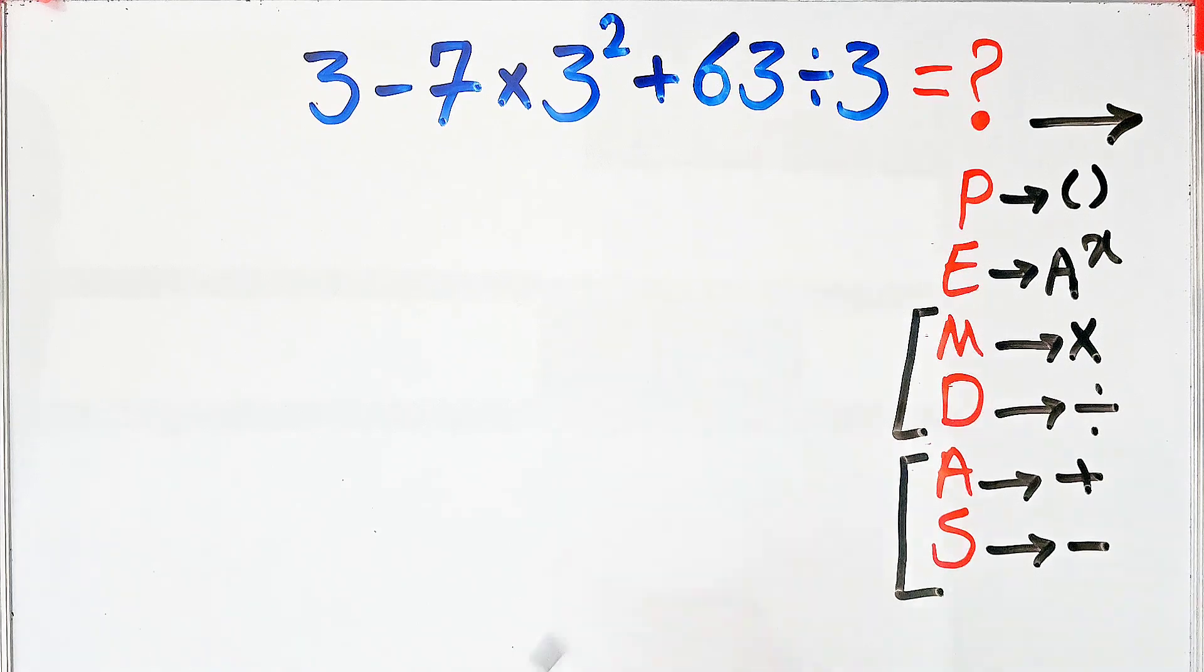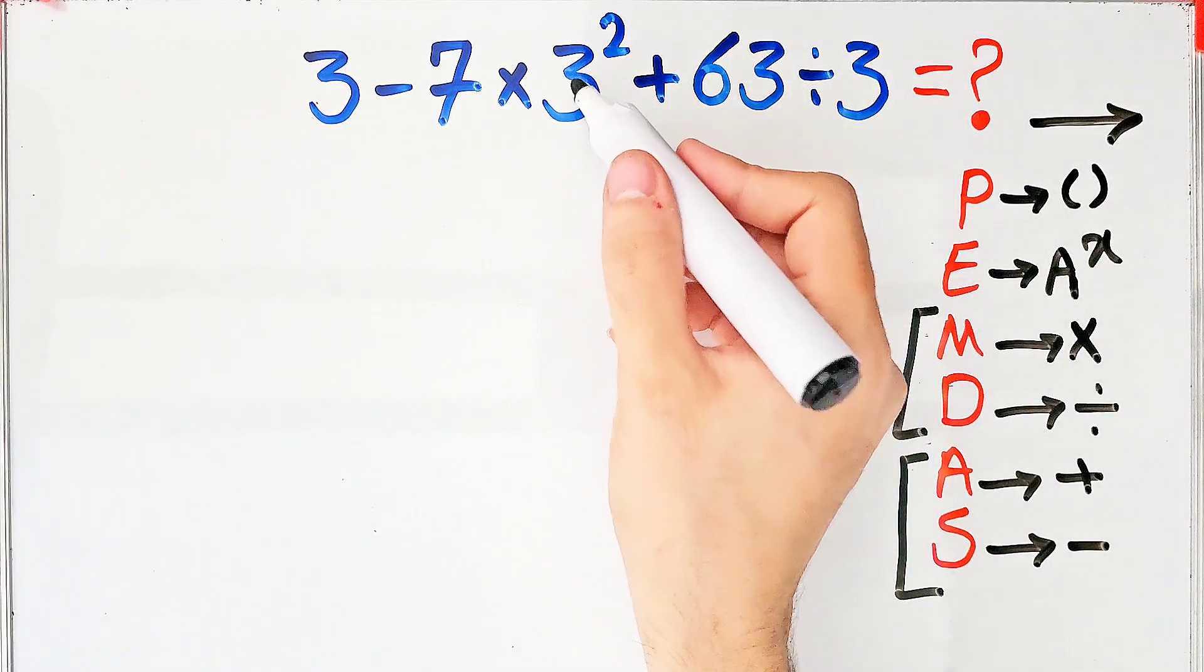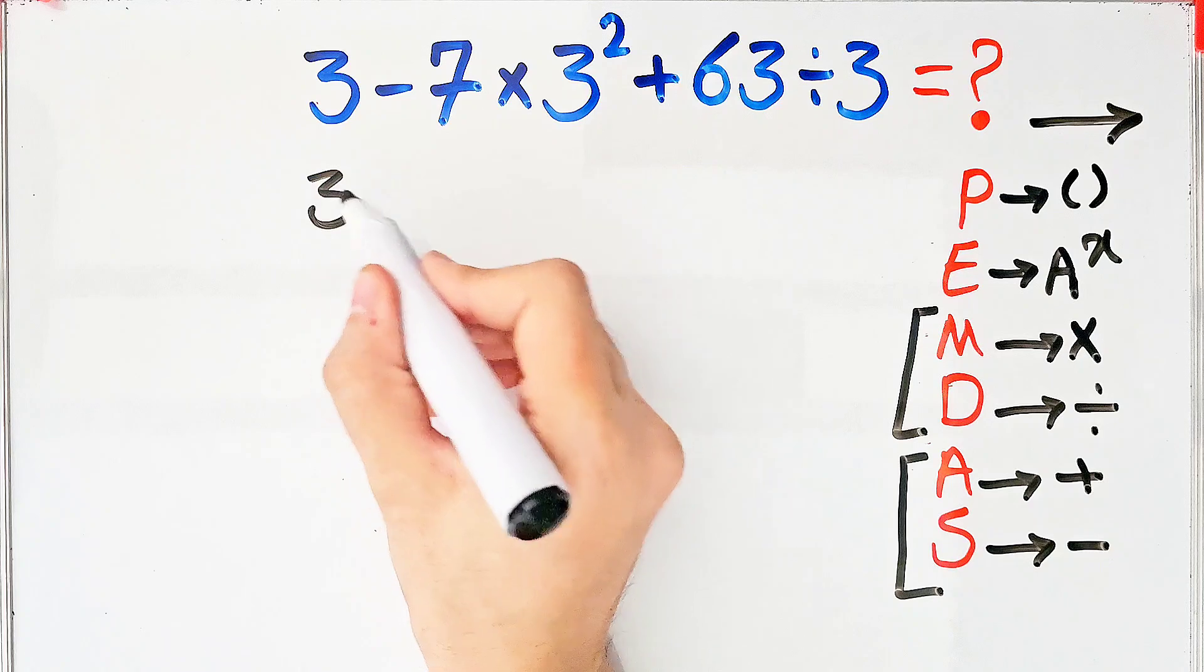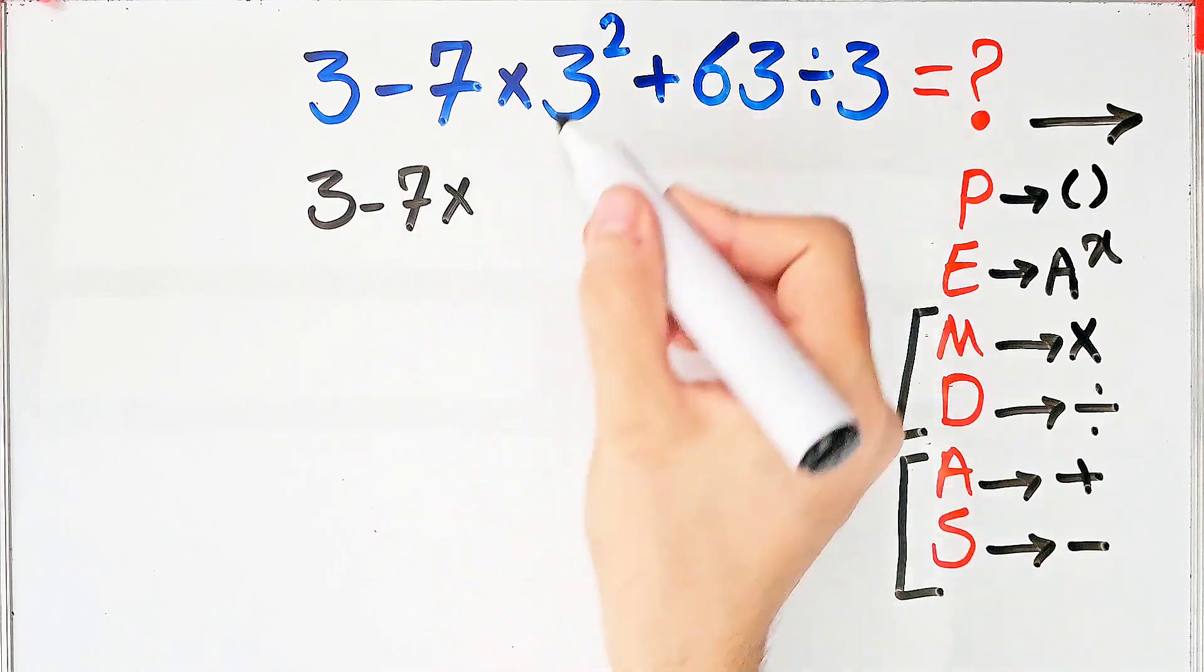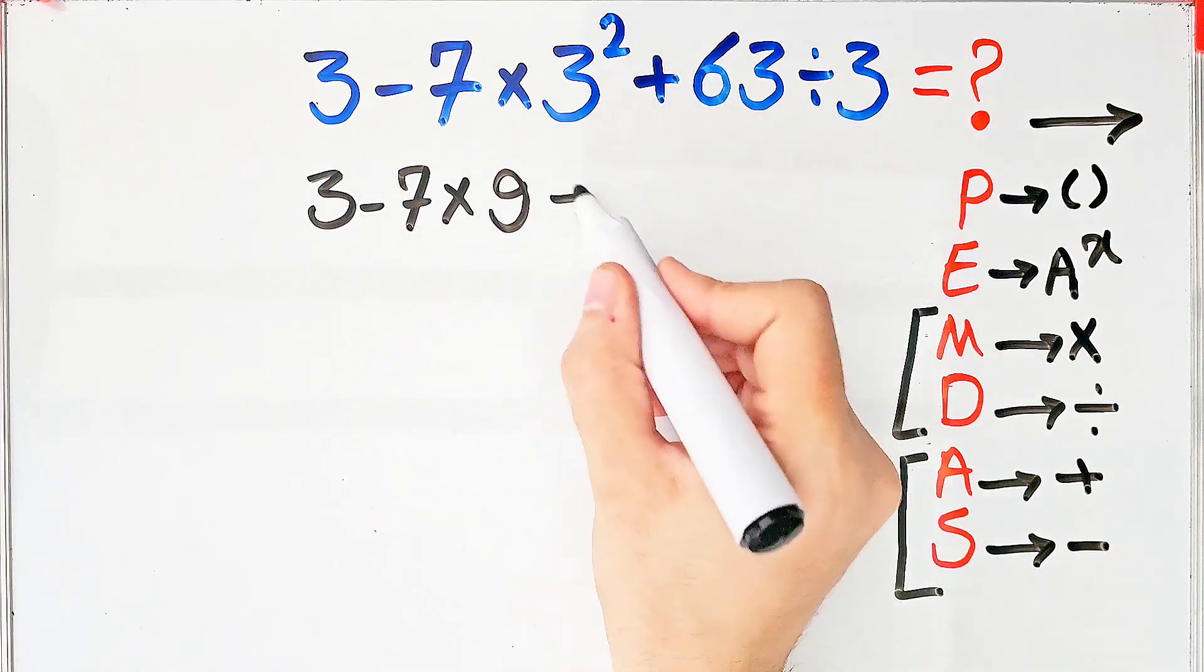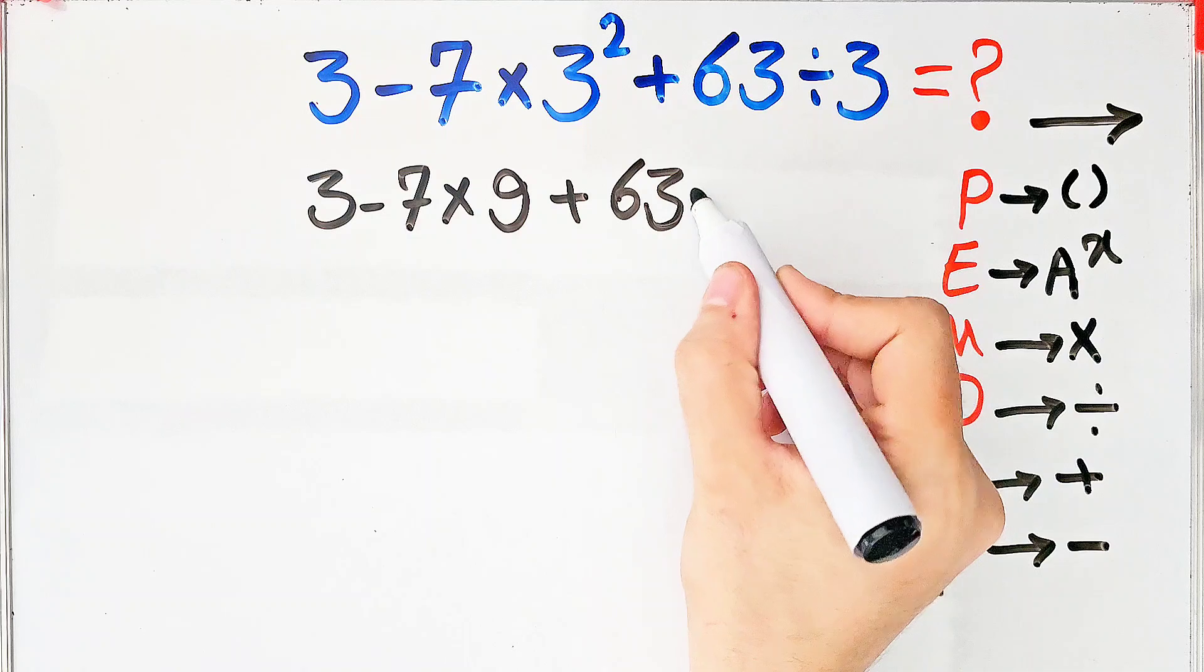In this question, first we simplify the exponent. 3 to the power of 2 equals 9. Now we have 3 minus 7 times 9, plus 63, divided by 3.